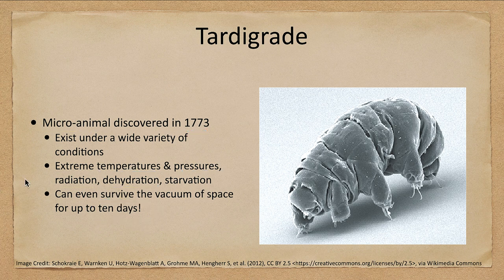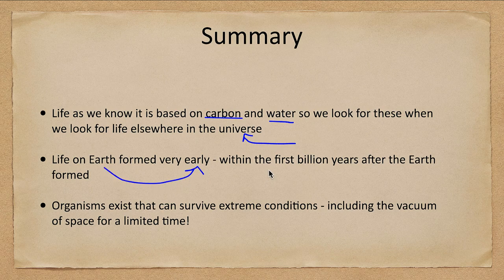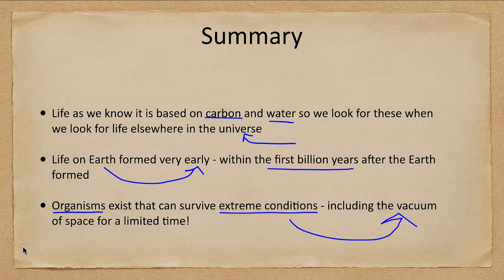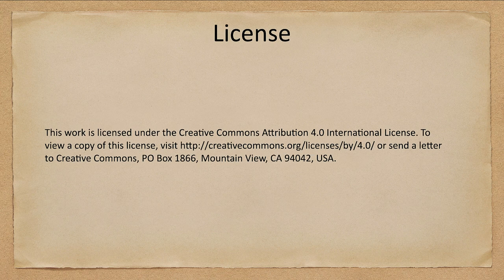Let's finish up this section with our summary. We've looked at life as we know it based on carbon and water — that's what we look for when searching for life elsewhere in the universe. Life on Earth formed very early, within the first billion years and maybe even earlier. We looked at organisms that can survive extreme conditions, including the vacuum of space for a limited time. That concludes this lecture on astrobiology. We'll be back next time for another topic in astronomy — have a great day, everyone.